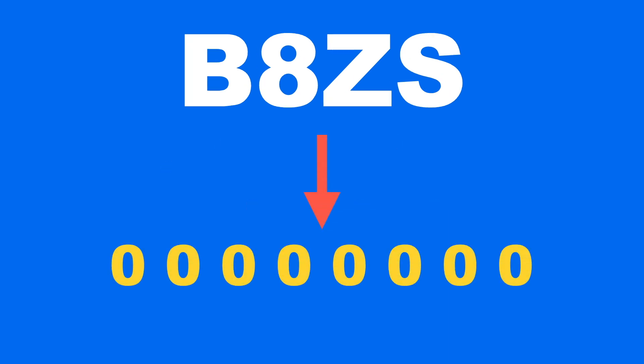Basically, B8ZS works just like bipolar AMI, but it also has substitution rules for long sequences of zeros, which allows it to maintain synchronization.